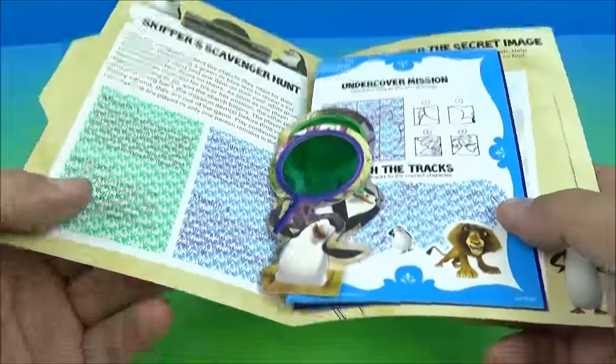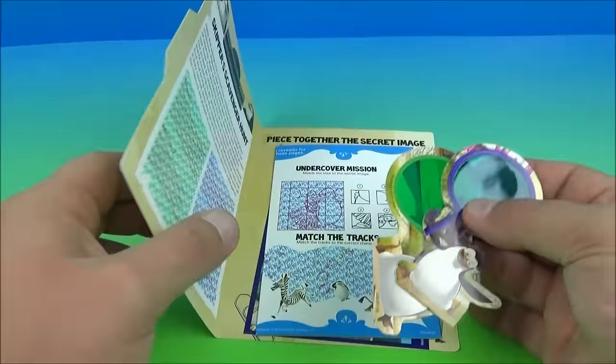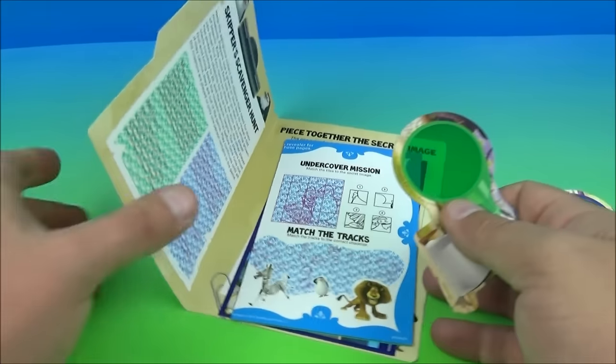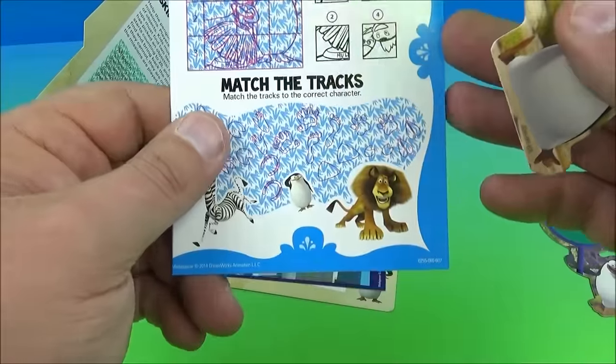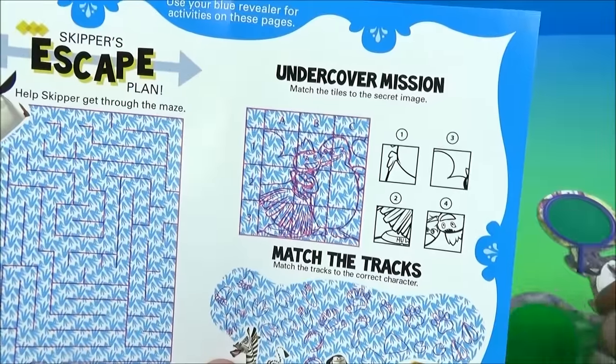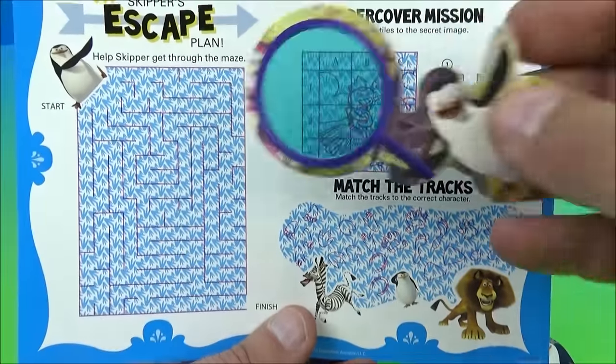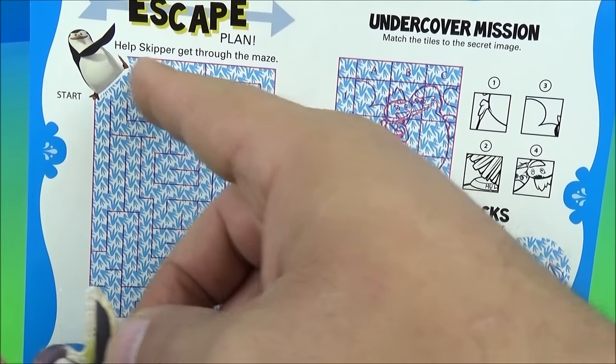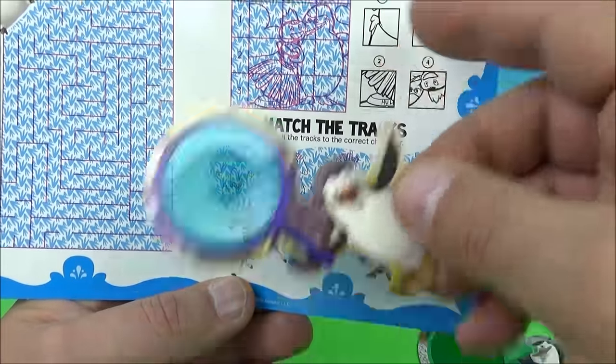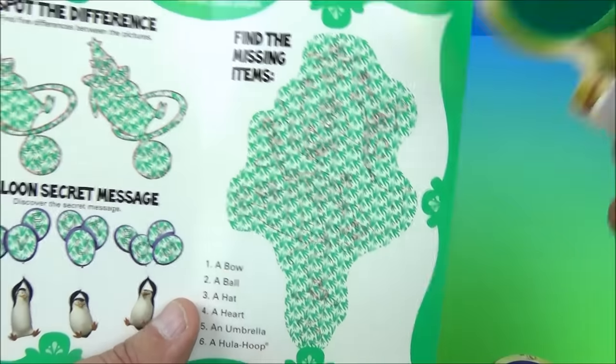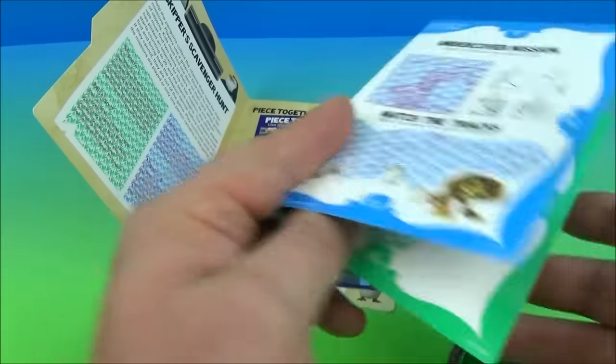So you open this up and inside here's all kinds of little activities. You have the two little decoders if you will, a blue one and a green one which is really neat. We have an undercover mission, you open this up just like this. Use your blue revealer activities on these pages. You have Skipper's escape plan, help Skipper through the maze, this is really neat. Match the tracks, undercover mission, match the tiles to the secret image, this is lots of fun. Then on the back it says use the green revealer, so you would switch and grab this one here and hold it over these. This is awesome, lots of fun activities here.